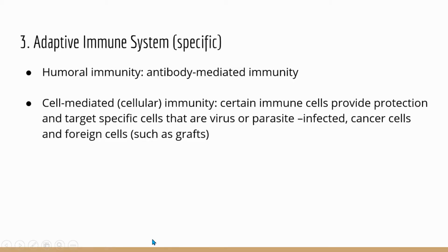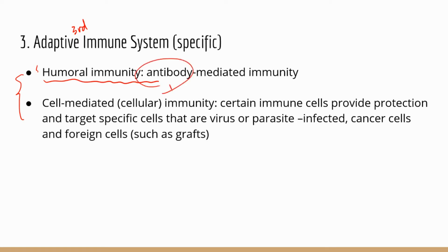Now let's look at the adaptive immune system, which is the third line of defense. This type of immunity is very specific — they only target a specific virus, a specific bacterium, or specific parasite. In this particular immune system there are two arms. The first one, humoral immunity, is also known as antibody-mediated immunity, because this type of immunity involves protection from antibody.